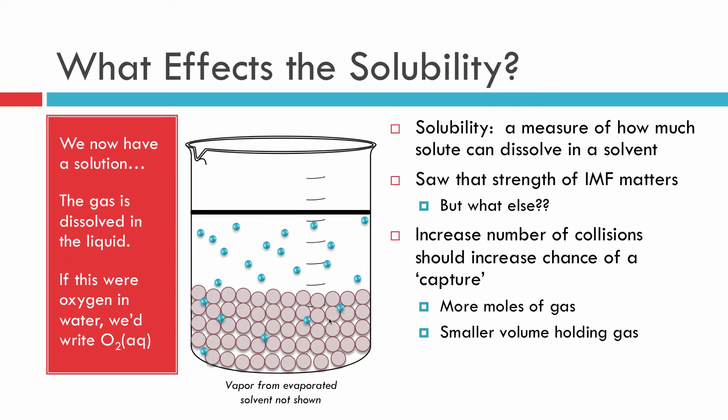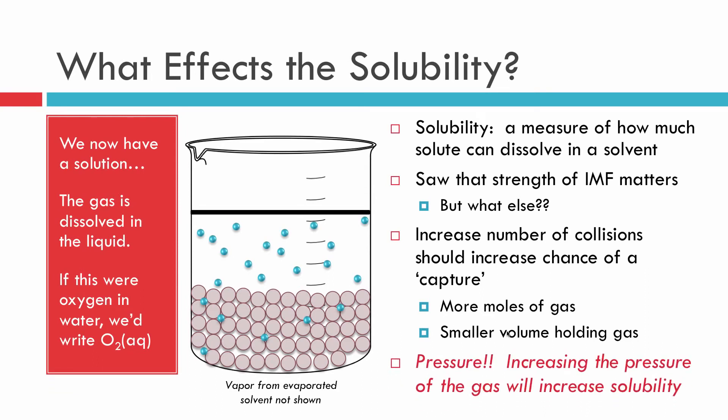If we increase the number of moles or decrease the volume, we get more collisions and more dissolved gas. There's one parameter that captures both of those ideas — increasing moles and decreasing volume — and that's pressure. If we increase the pressure of a gas over a liquid, we increase its solubility. That's essentially Henry's Law: it's about pressure and about the types of intermolecular forces present.